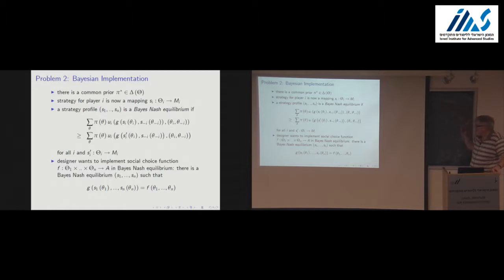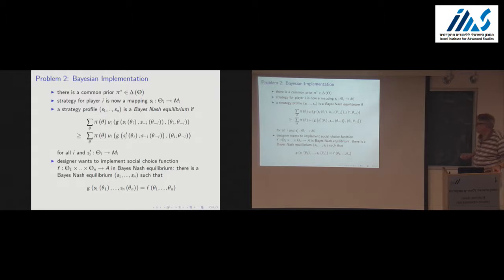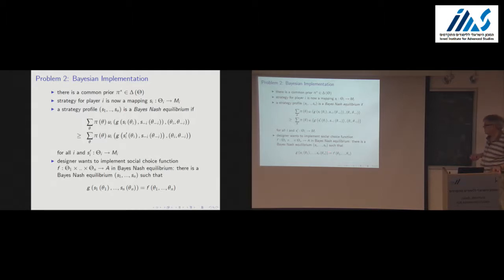The whole point of this exercise is that we want full Bayesian implementation — every Bayes-Nash equilibrium generates an outcome consistent with the social choice function. That's the statement: in Bayes-Nash equilibrium, every equilibrium generates an outcome consistent with F.